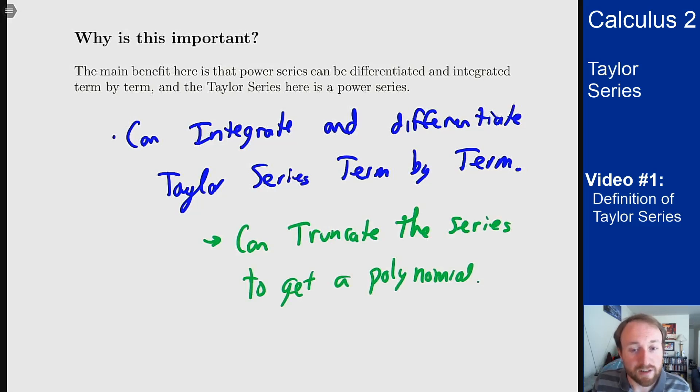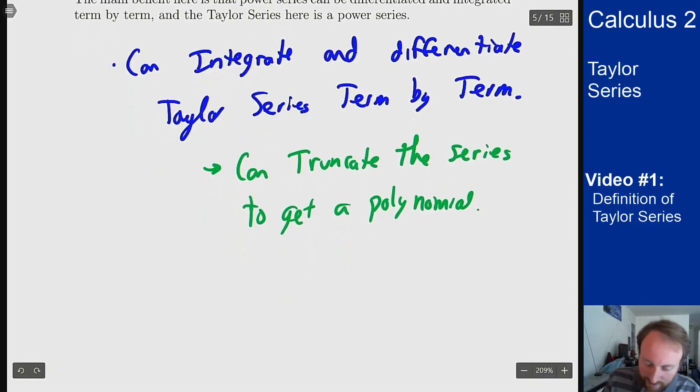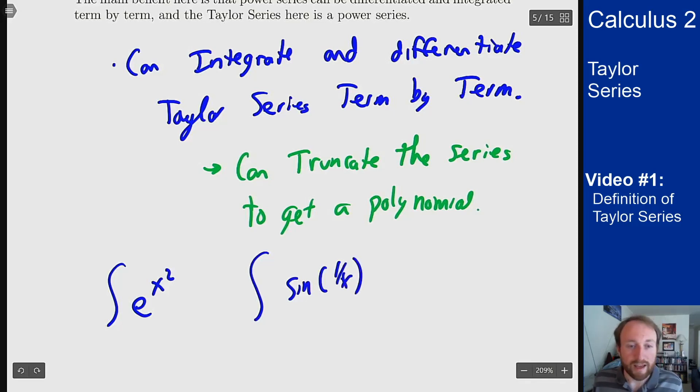And this becomes particularly useful for functions that we don't have ways to integrate. Things like integral of e to the x squared or integral of sine of one over x. We don't really have formulas for these but if I can approximate it by a Taylor series and then integrate that polynomial I can get close enough to any definite integral I want for these functions.